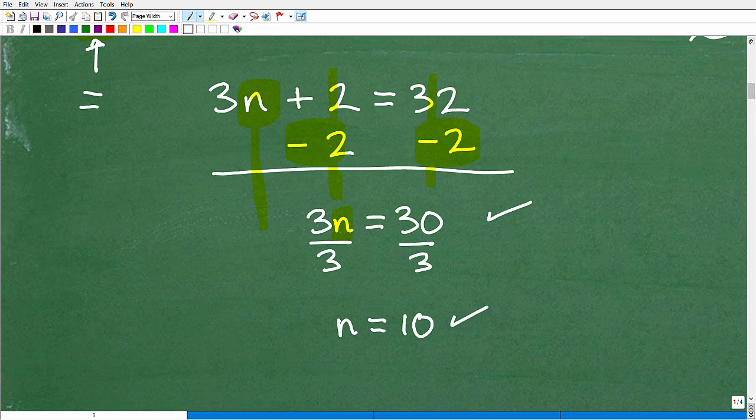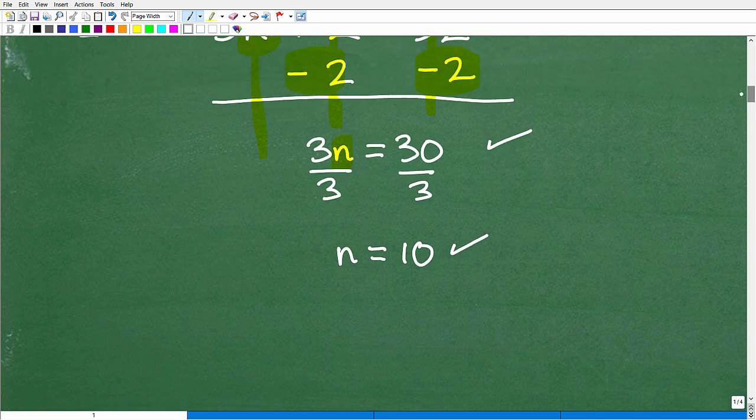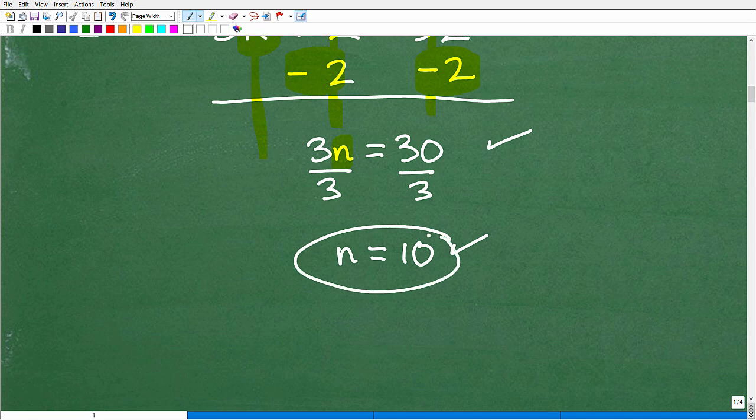Of course, we already knew that the answer was 10. Some of you probably could already figure that out by just doing some mental math. But again, the main idea here is to show you how we go from verbal to variable, and then we solve equations. This is a very typical algebra problem. You need to know how to do this for sure. This is our answer.